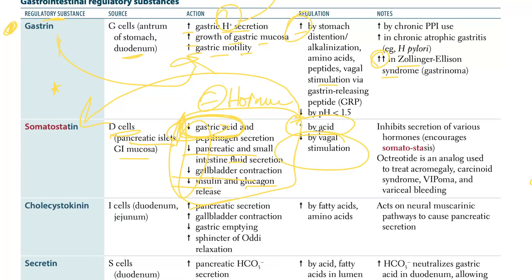Somatostatin is decreased by vagal stimulation. It inhibits secretion of various hormones. Octreotide is a somatostatin analog used to treat acromegaly, carcinoid syndrome, VIPoma, and variceal bleeding - we discussed how octreotide decreases portal pressure.